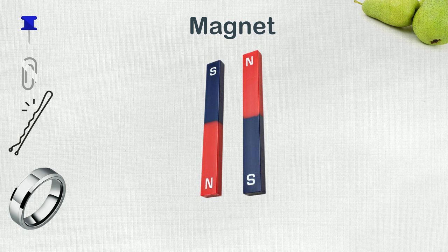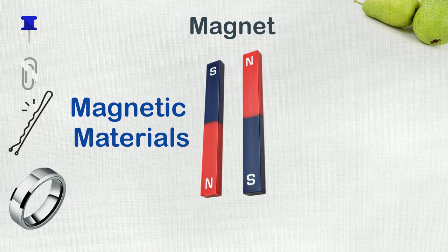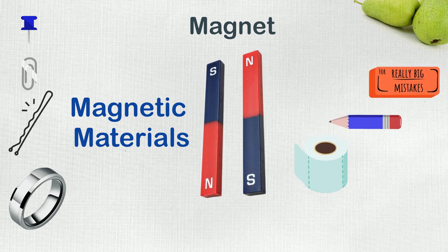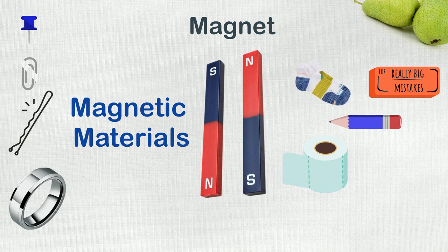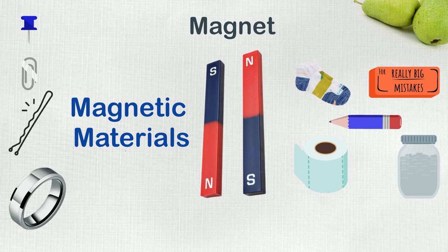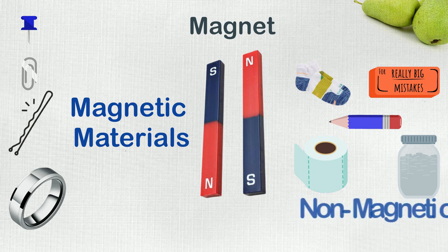And the pencil, tissue paper, eraser, sock, and glass jar did not get pulled towards the magnet because they are made from wood, rubber, fabric, and glass, which are non-magnetic materials.